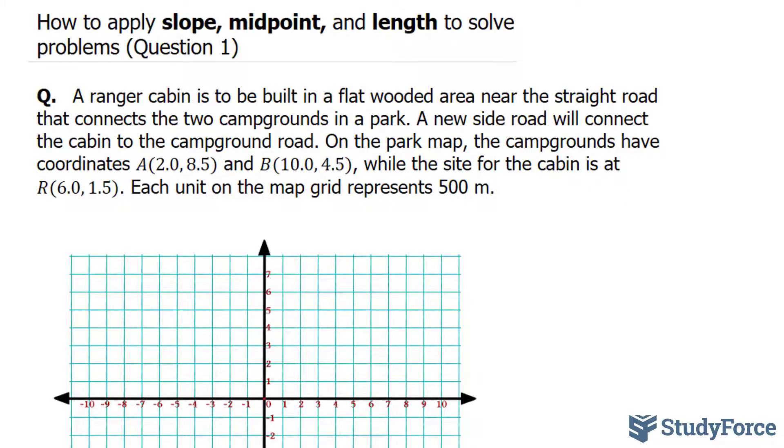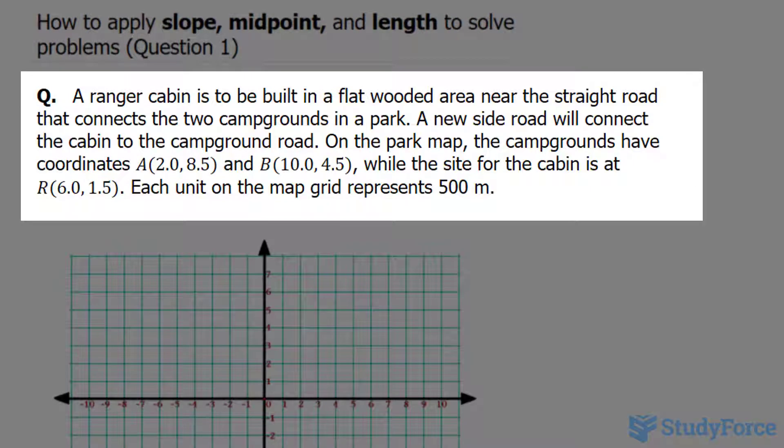In this lesson, I'll show you how to apply slope, midpoint, and length to solve problems. The question reads: a ranger cabin is to be built in a flat wooded area near the straight road that connects the two campgrounds in a park. A new side road will connect the cabin to the campground road.